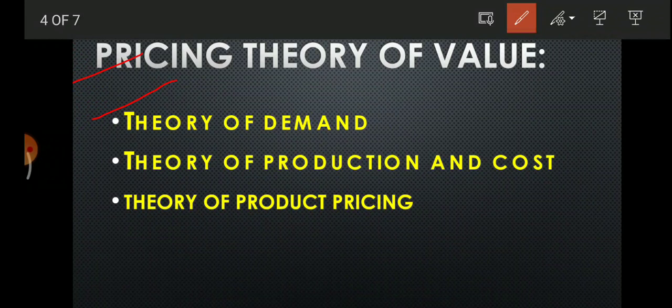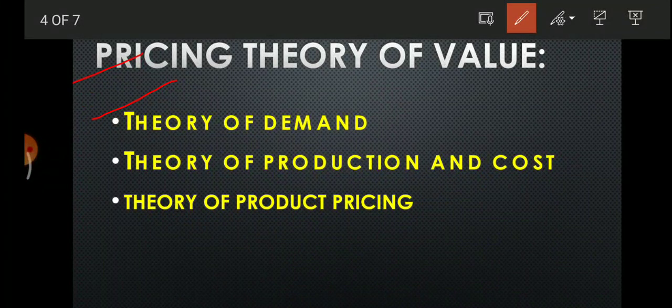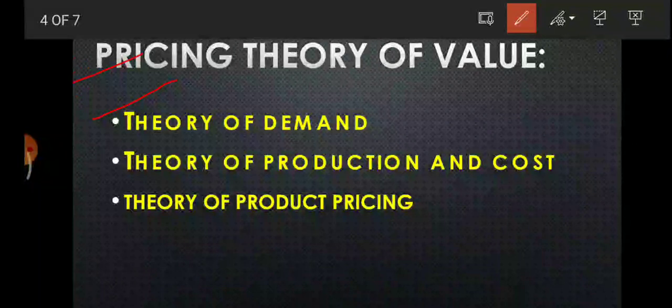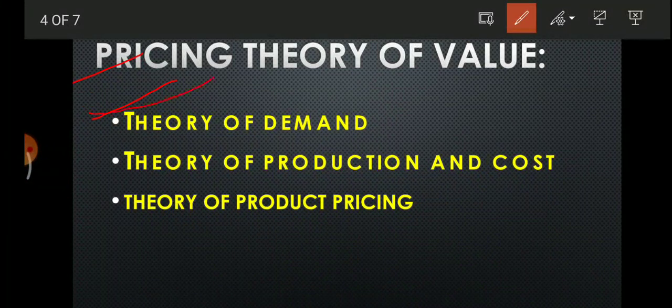Under the theory of demand, we study the law of demand, elasticity of demand — meaning fluctuations in demand — and determinants of demand, which are factors other than price that influence demand. For example, if price increases, demand falls; if price decreases, demand rises. But beyond price, other factors like income and population also influence individual demand. If income increases, one may demand more; if India's population grows, product demand also rises. These are called determinants of demand.